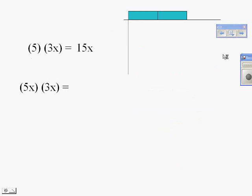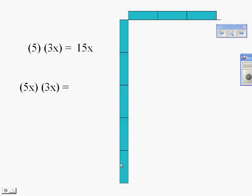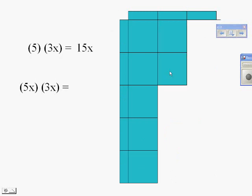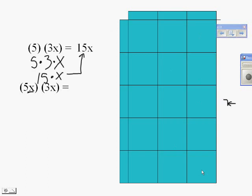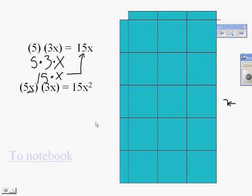Drawing it out with our picture model, we have 3x's on top and 5x's along the side. That would give us 1 through 15 — 15x squares. Again, this way is going to get relatively bulky if we try to keep drawing all this, so we're looking at it mathematically.